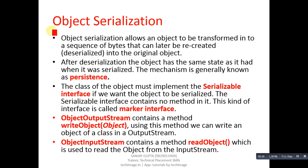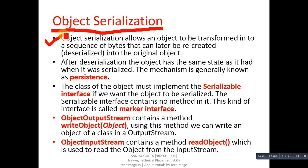This concept is required while you are reading or writing an object of a class into a file. Object serialization allows an object to be transformed into a sequence of bytes that can later be recreated, or deserialized, into the original object.